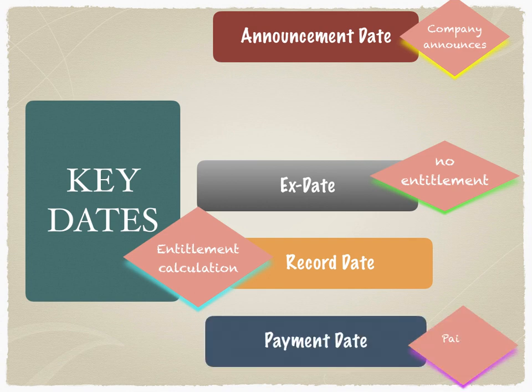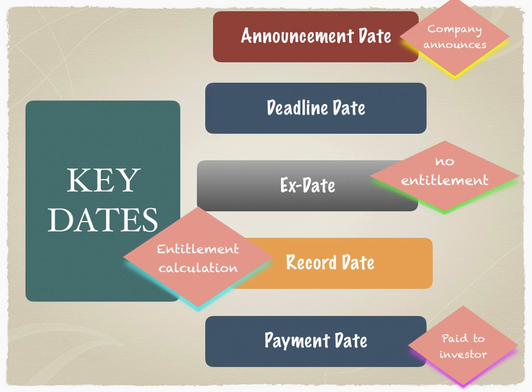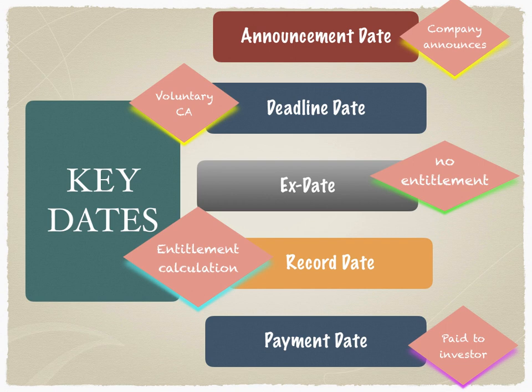Then comes the payment date, which is the date on which the final payment has to be submitted to the investor. Before moving on, there is a very important date called the deadline date, applicable for voluntary corporate actions. Voluntary corporate actions — like tender offers, rights offers, etc. — are voluntary in nature, meaning the investor must act on them. The deadline date is the date by which the investor must submit to the registrar what they intend to do, whether in a tender offer, buyback, rights issue, etc.